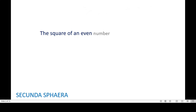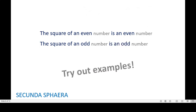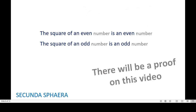The first question we want to answer is: what is the square of an even number? As you may imagine, it is going to be an even number. We are also going to answer what is the square of an odd number — which you may imagine is going to be an odd number. You can try out examples, but there is also going to be a proof in this video.